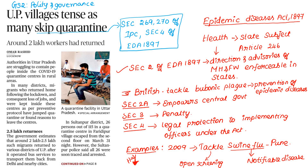First news: UP Villages Dense - Many Skip Quarantine. In Uttar Pradesh, there are migrants from Delhi who have returned.